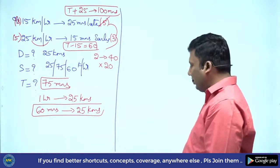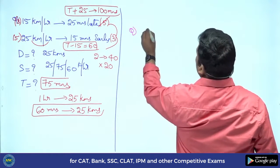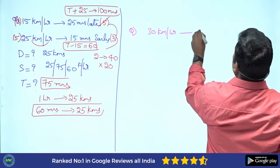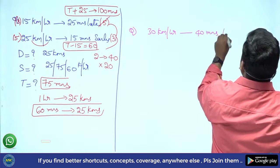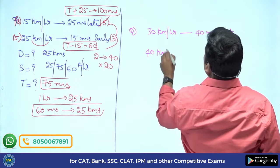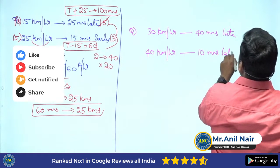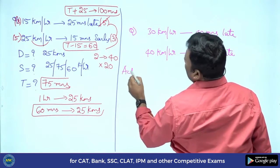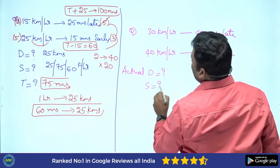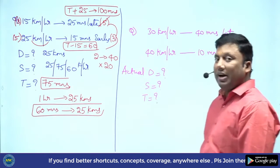One more question: 30 km/h — 40 minutes late; 40 km/h — 10 minutes late. Find actual distance, actual speed, and actual time period.